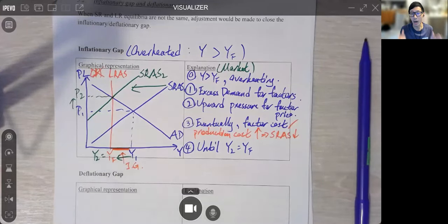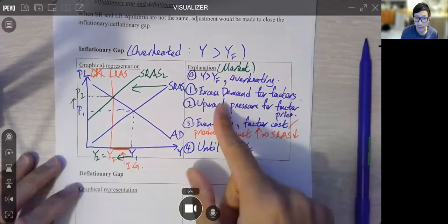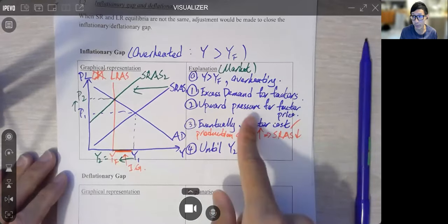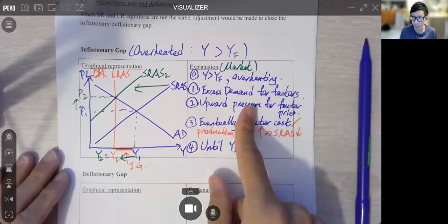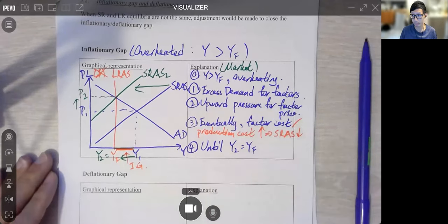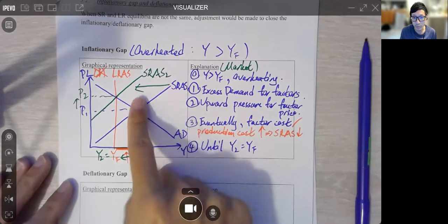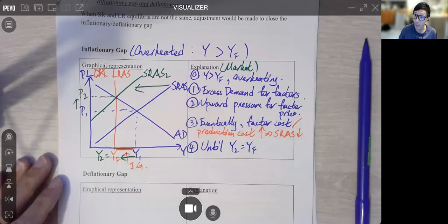Excess demand. So what happened is that? If you remember, in our demand supply, if there is an excess demand, there would be an upward pressure for factor price, or factor cost. Now, there is an upward pressure for factor price. So eventually, because of the excess demand, factor cost, which, by the way, is also production cost, would go up. As saying if production cost would increase. Production cost increase is what meaning? Meaning, SRAS would decrease. It drops. Until the new output level at Y2 equals to YF again.